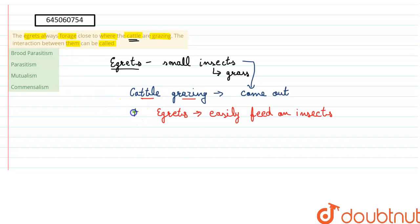the egrets they are being benefited, and there is no effect—neither harm nor any benefit to the cattle. So this type of relation is called commensalism.